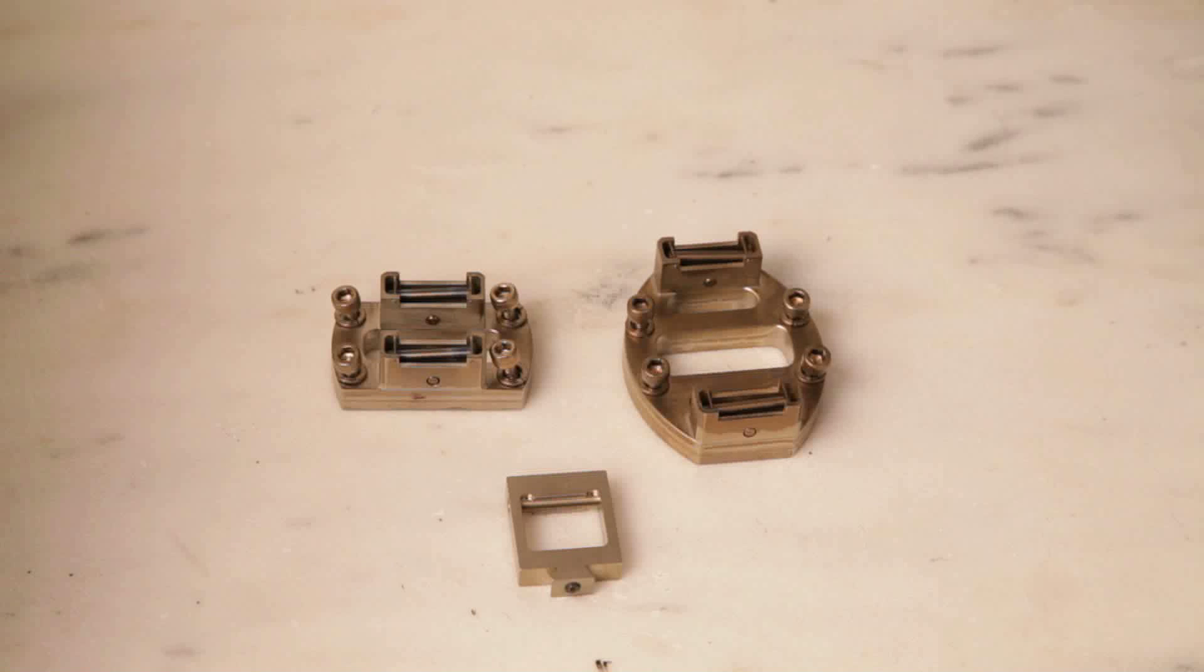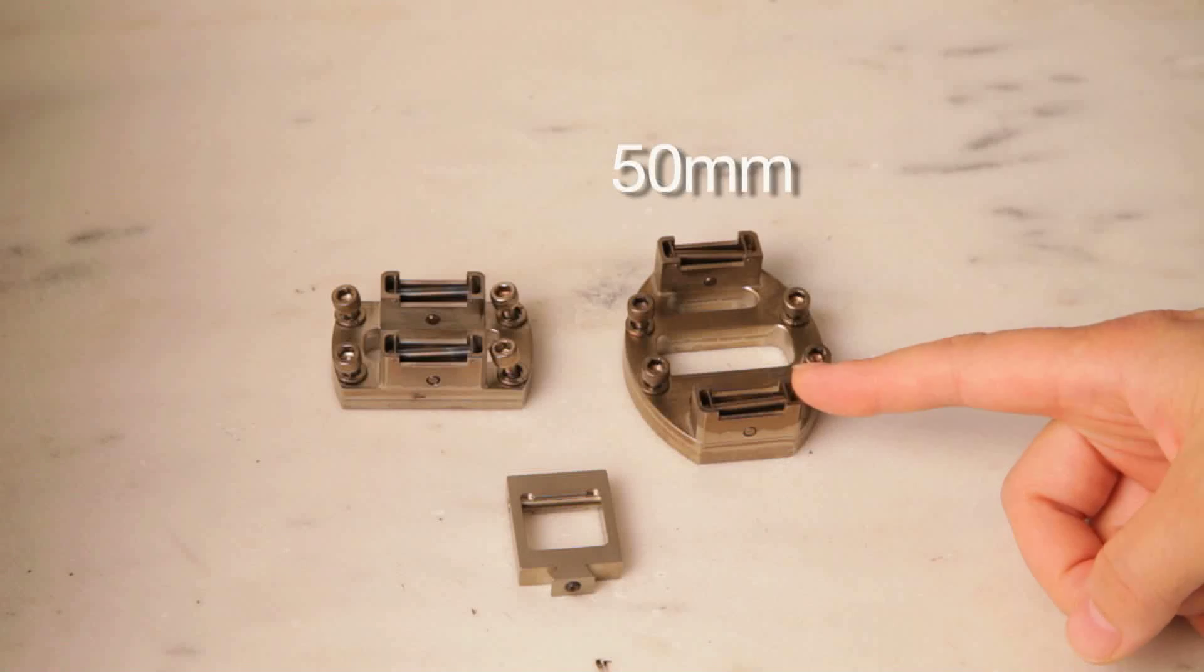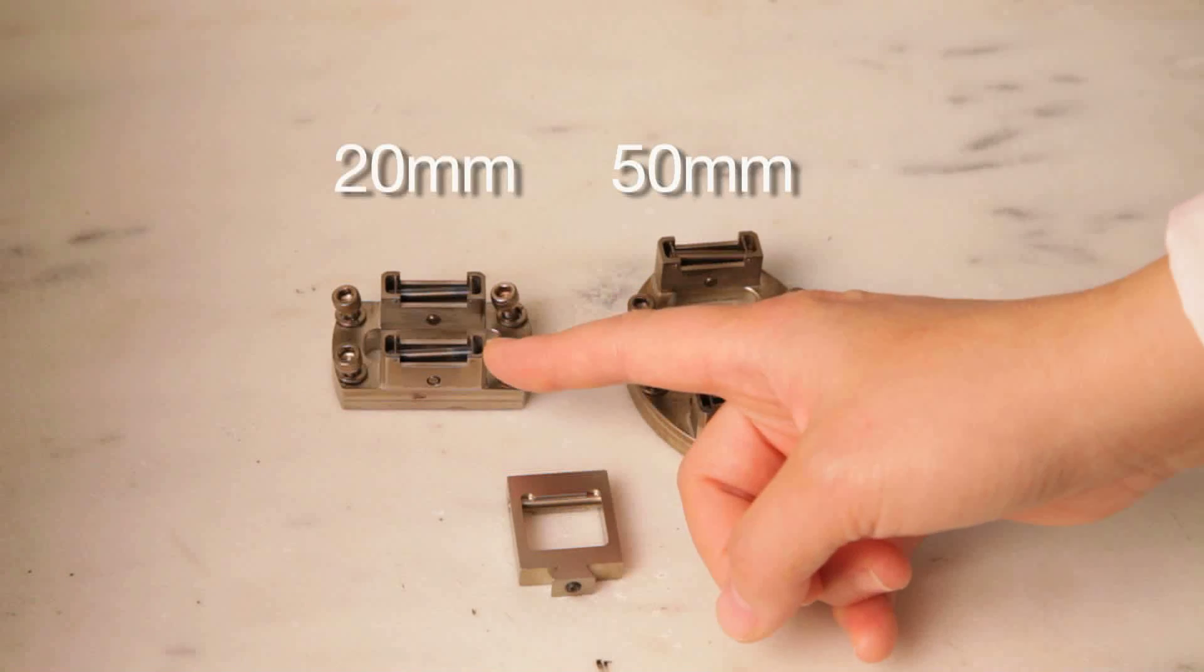This TA Tech Tip is going to show you how to calibrate the Q800 Low Friction 3-Point Bending Clamp. TA Instruments offers two sizes of low friction 3-Point Bending Clamps: 50mm and 20mm.